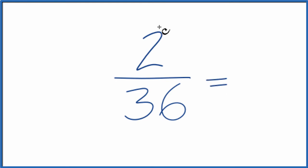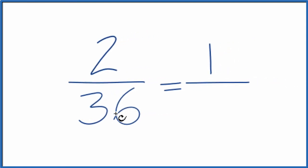We divide the numerator here by 2. 2 divided by 2 is 1. Then we divide the denominator here by 2. 36 divided by 2 is 18.